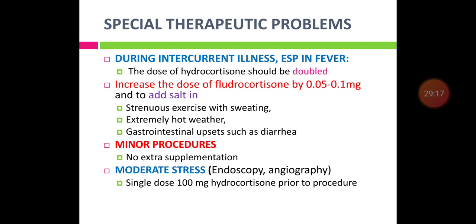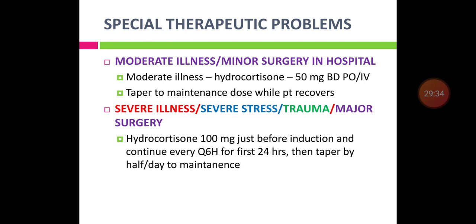For minor procedures, no extra supplementation is needed. For moderate procedures like endoscopy or angiography, give a single dose of 100 mg hydrocortisone prior to the procedure. For moderate illness or minor surgery in hospital, give 50 mg hydrocortisone BD orally or IV and taper to maintenance dose once recovered. For severe illness, severe stress, trauma, or major surgery, give 100 mg hydrocortisone just before induction and continue every 6 hours for the first 24 hours, then taper to maintenance dose.